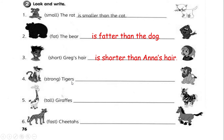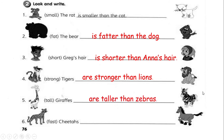Tigers are stronger than lions. Giraffes are taller than zebras. Here we have cheetah and also horse — cheetahs are faster than horses. Class, I hope that you can compare two animals, two things correctly.